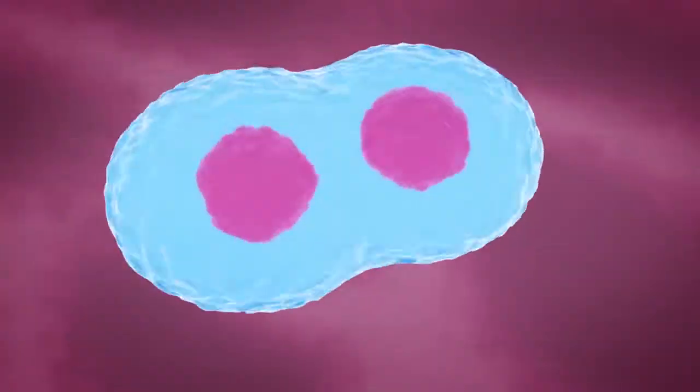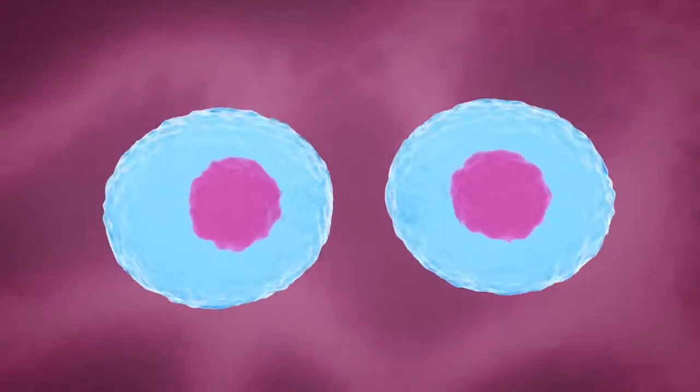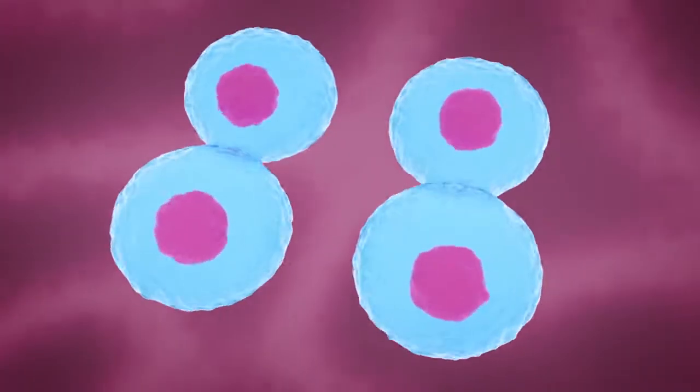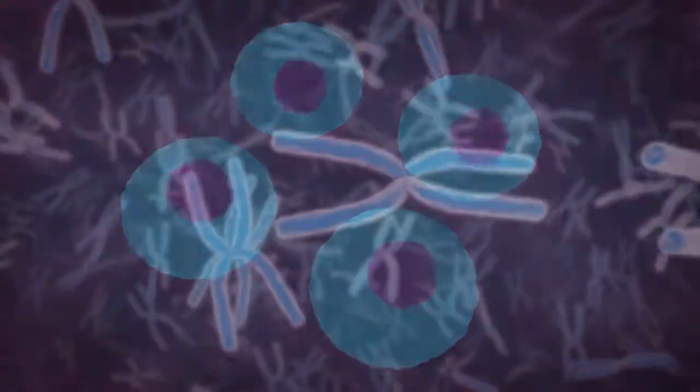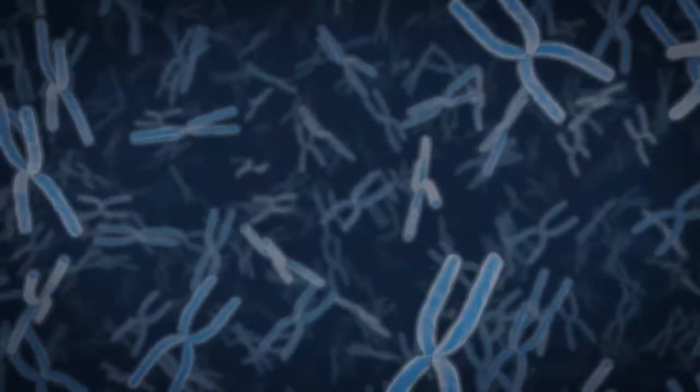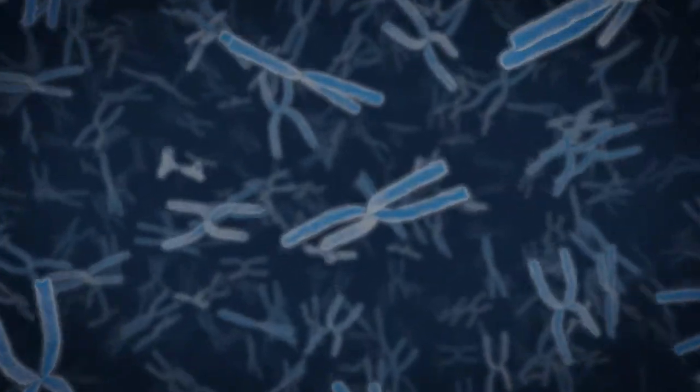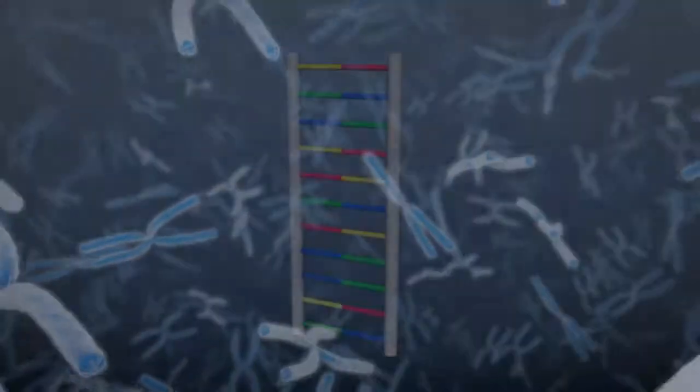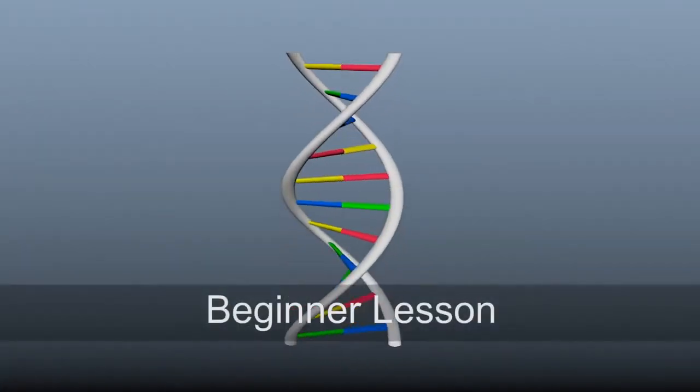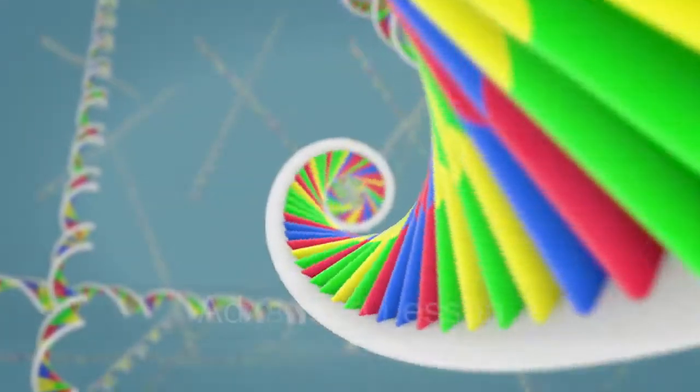The first one is cell division, where we will create a cell that will divide twice. And then we're going to model and create some chromosomes and use some of Maya's motion graphics tool sets to create a crowd of them. And then we will create DNA in two different ways, a more beginner way and a more advanced way.